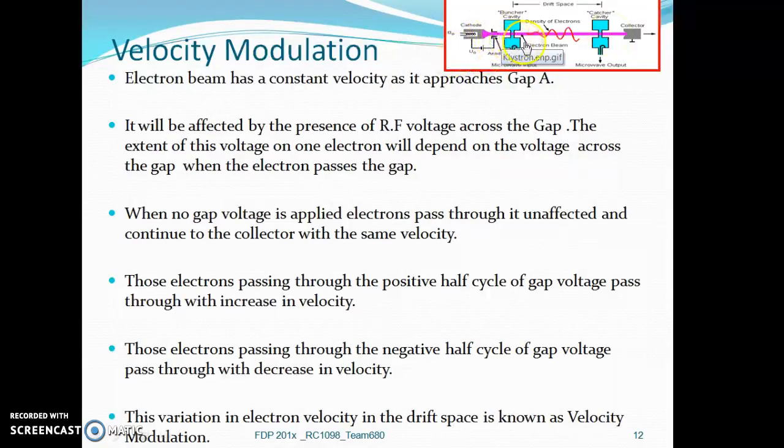When the RF signal passes through a positive half cycle, the velocity of the electrons will increase as they move towards the catcher cavity. When it passes through the negative half cycle, there will be a decrease in the velocity of the electrons as they drift through the drift space. This variation in electron velocity in the drift space due to the RF voltage across gap A is known as velocity modulation.